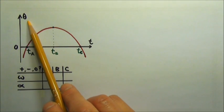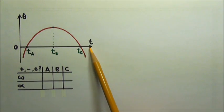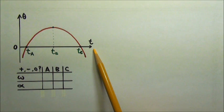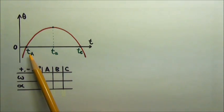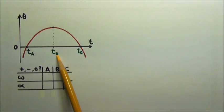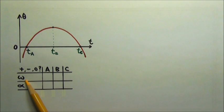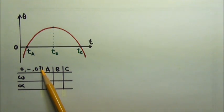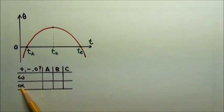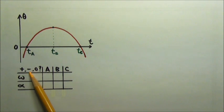Here's an angular displacement as a function of time graph for a rotating object. State for each of the moments a, b, and c whether the angular velocity is positive, negative, or zero, and whether the angular acceleration is positive, negative, or zero.